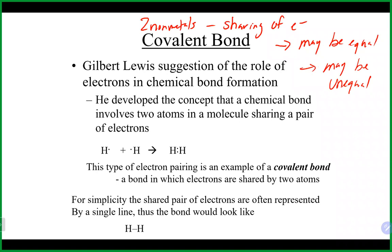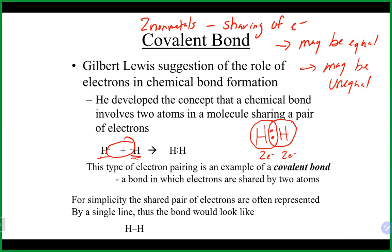Lewis described the bond as the sharing of electrons. When we take two hydrogen atoms, each with one electron, they're both non-metals, so they'll share those electrons. The two shared electrons in the middle count for the hydrogen on the left and also for the hydrogen on the right. By sharing electrons, both hydrogens achieve two electrons, which matches helium — number two on the periodic table — allowing both hydrogens to achieve noble gas configuration.